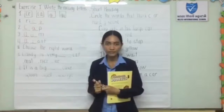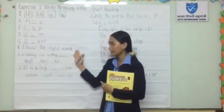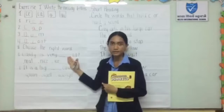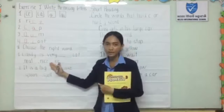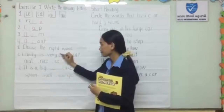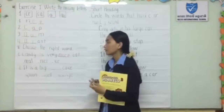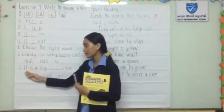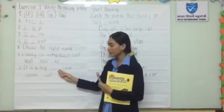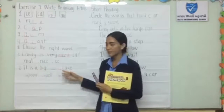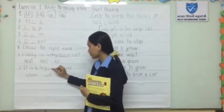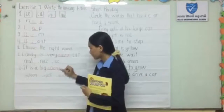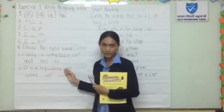So now let's move to our second exercise: choose the right word. For sentence number one, the answer is 'Candy'. The complete sentence is: Candy is very sweet. For sentence number two, the answer makes the complete sentence: It is a big sponge cake.